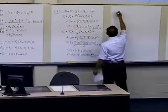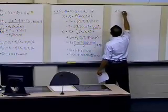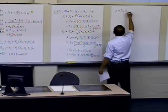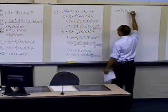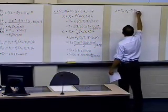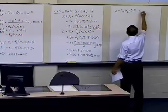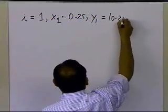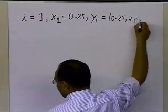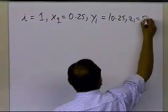So since I want to find the y value at 0.5, i is equal to 1, x1 will be now equal to 0.25, because we are a step ahead. y1 we just found out to be 10.25, and z1 we just found out to be equal to 5.125.